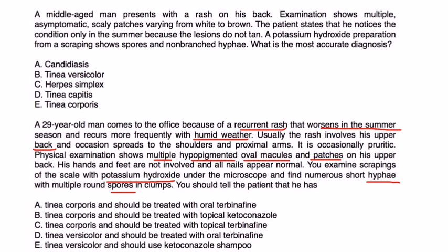You have to figure out: is it tinea corporis or tinea versicolor? Remember, tinea corporis is a fungal rash that appears as circles with a slightly raised, erythematous perimeter. This vignette describes hypopigmented macules, which is very characteristic of tinea versicolor. He also says it worsens in the summer, which is also part of the history. So we can eliminate other options. Both remaining choices point to tinea versicolor, which is the correct diagnosis — but how do you treat it?